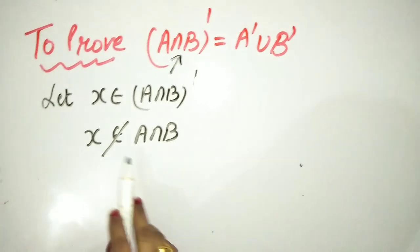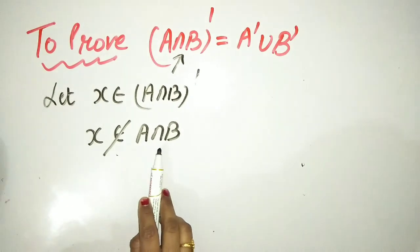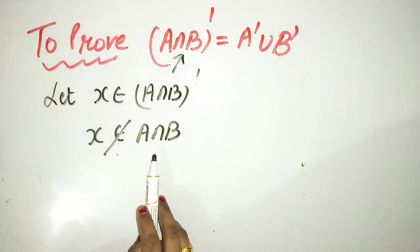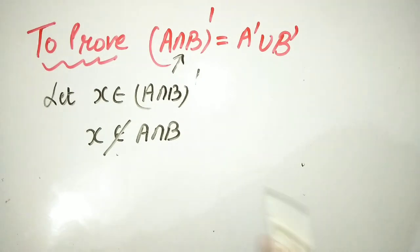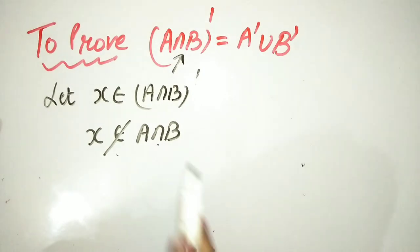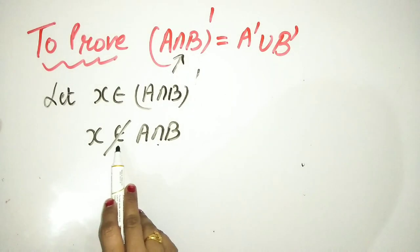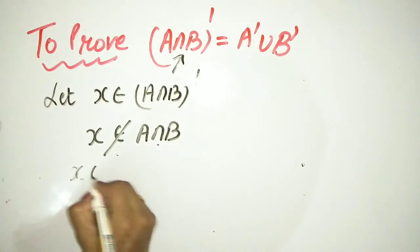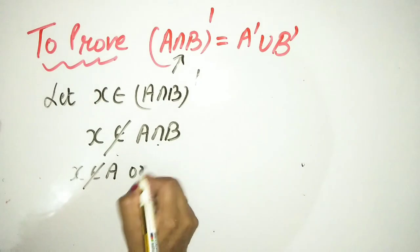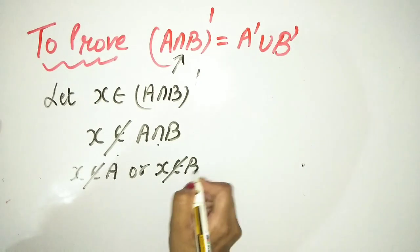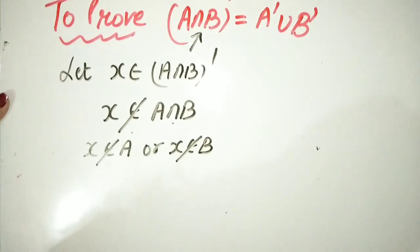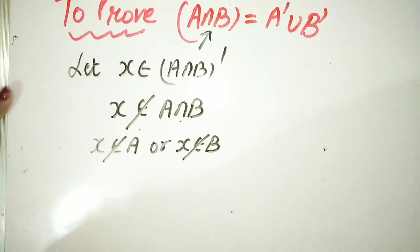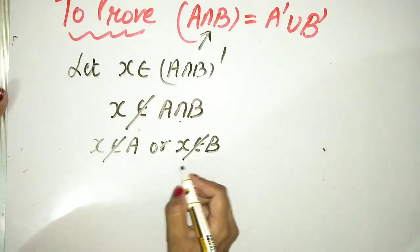Since it doesn't belong to intersection, and intersection means 'and' — but since it doesn't belong, we use a trick: when 'and' doesn't belong, you put 'or'. So x doesn't belong to A or x doesn't belong to B.